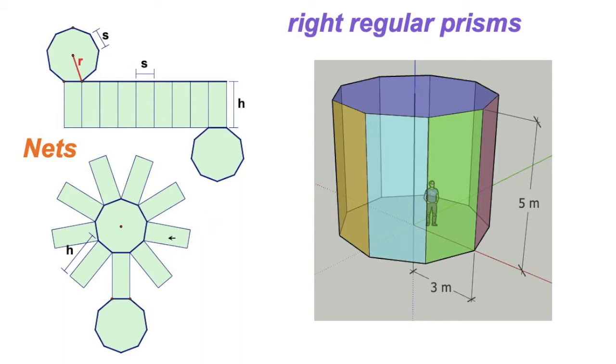And these are the sides, these rectangular sides, nonagon: 1, 2, 3, 4, 5, 6, 7, 8, 9 sides, 9 rectangles. That makes sense.